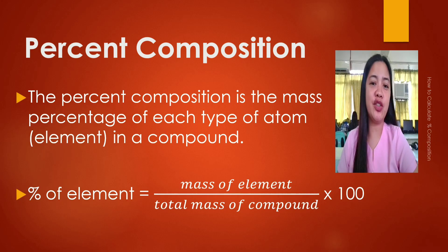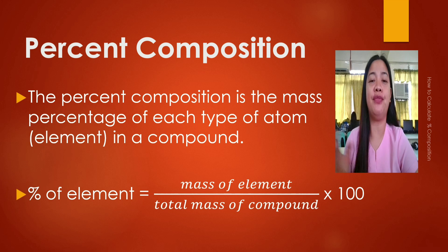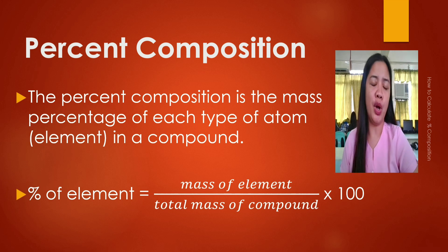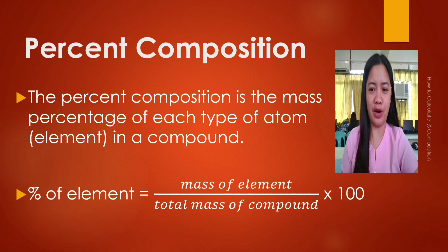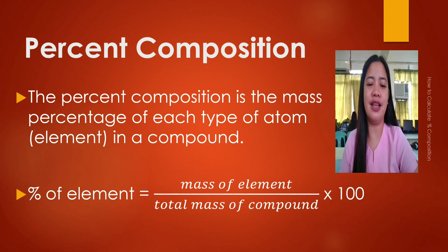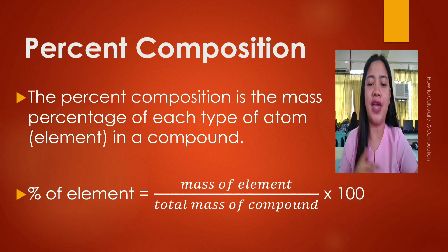Now let's define percent composition and its formula. The percent composition is the mass percentage of each type of atom or element in a compound. To solve, this is our formula: percent of element is equal to mass of element divided by total mass of a compound times 100.